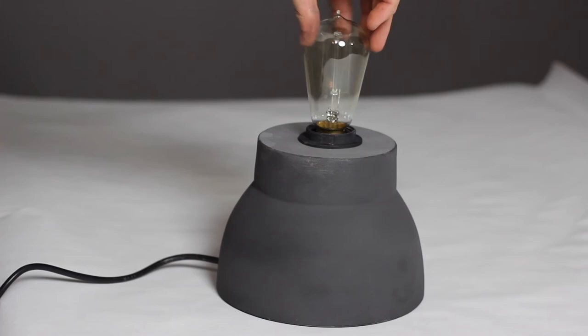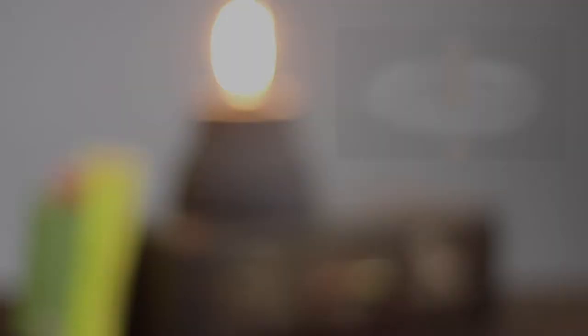Add a cool light bulb and enjoy your industrial table lamp. If you like this IKEA hack, check out some of our other IKEA hacks like this tiered stand.